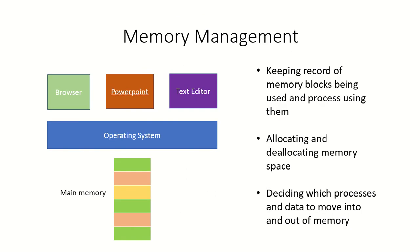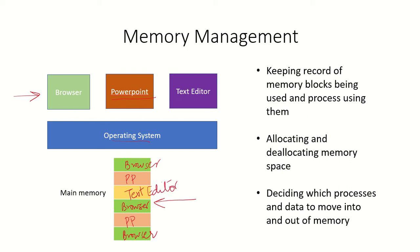Another task of the OS is memory management. The main memory is limited in size, and each process requires memory blocks for keeping its text or data. The OS allocates blocks to each process — for example, certain blocks might be allocated to the browser, others to the PowerPoint application, and one block to the text editor. It is the job of the OS to determine how many blocks to allocate to each application, keeping a record of memory blocks in use. Allocation and deallocation of memory space is also a function of the OS.